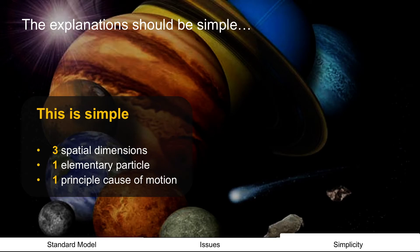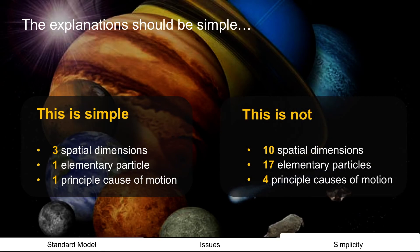Alright, three dimensions that we can see and test. One fundamental or elementary particle we saw it before with atomic elements is to get down to one proton. Hydrogen creates all the other elements. That's part of nature. And a principal cause of motion. And this is not. Ten spatial dimensions that we can't test. Seventeen elementary particles. Different reasons for forces. It's not simple.